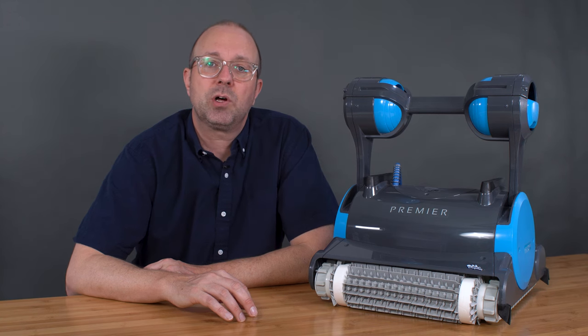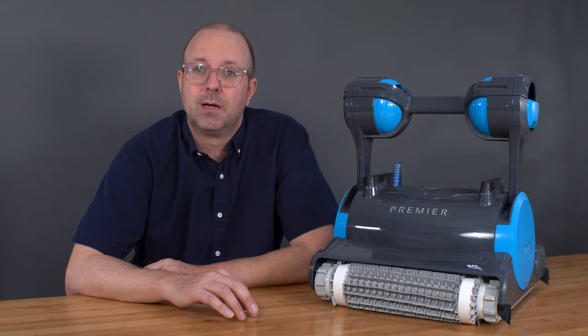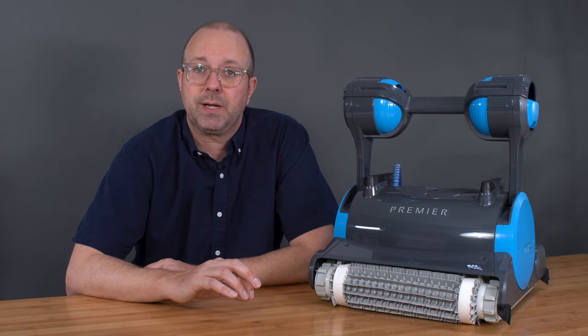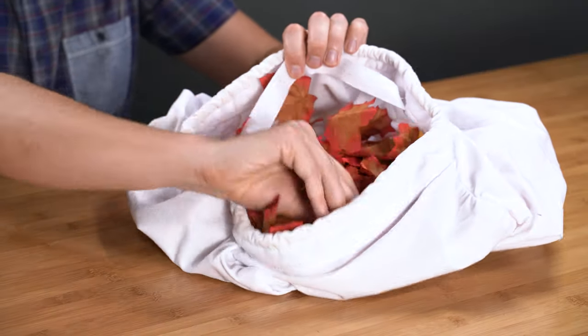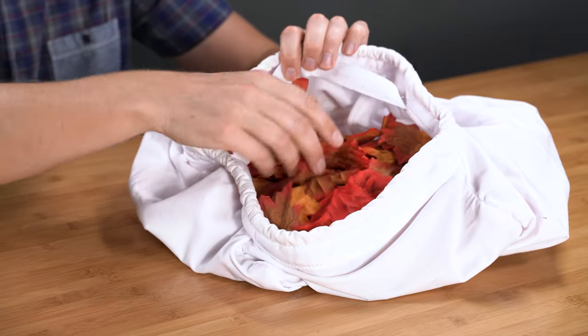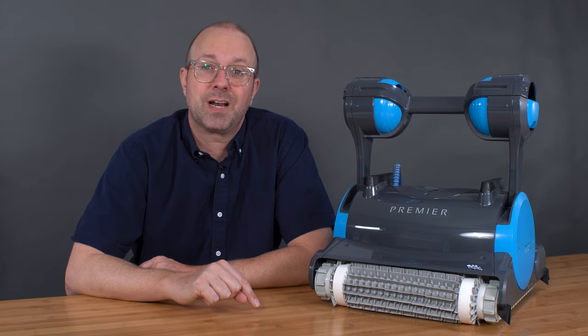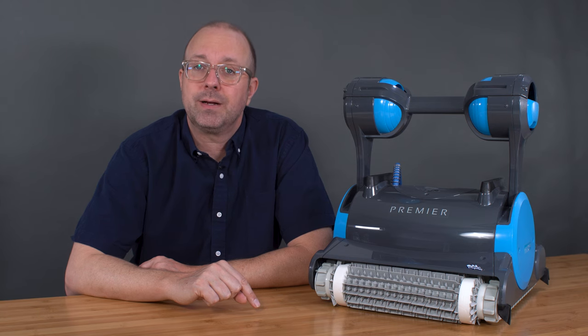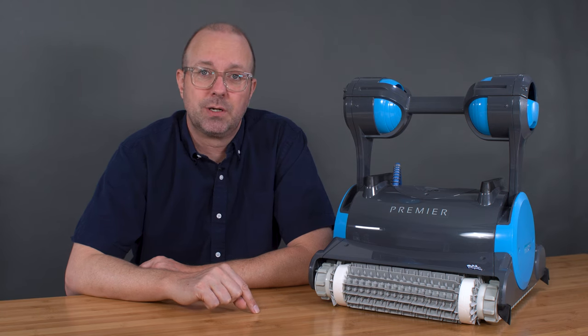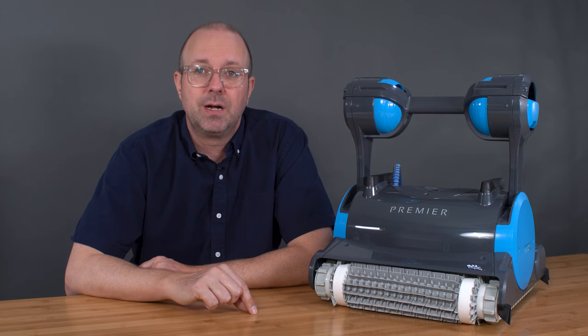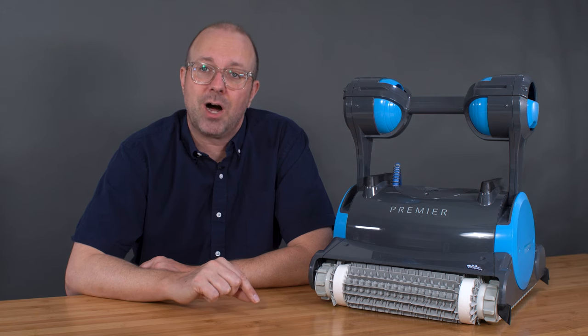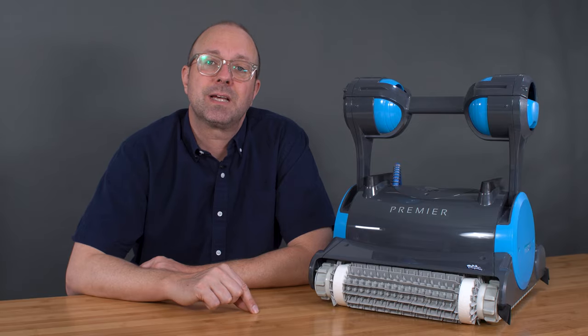It is the only Dolphin robot with a leaf bag. The leaf bags are perfect for lots of leaves and debris, as they expand to fit more debris than any of the cartridges. So if your pool is near trees or just gets a lot of larger debris, the Premier is the best-equipped robot to handle that challenge. Combined with the nano filter, it's truly a great robot that offers a complete clean and unique set of features.